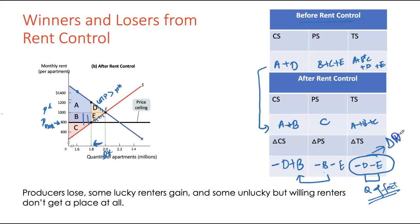Producers are definitely the losers — losing surplus from both lower price and lower quantity. Some consumers are better off — the lucky ones getting apartments at a lower price — gaining area B. But unlucky renters who lose their apartments lose area D. Consumers could be overall better or worse off depending on which dollar-value effect is larger, but producers are unambiguously worse off as the clear losers of this situation.